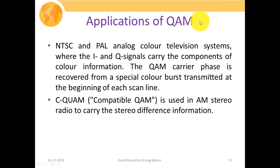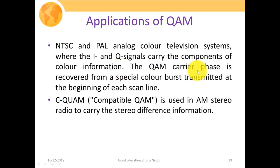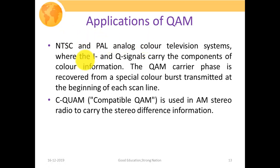The application areas of QAM include NTSC (National Television Standards Committee) and PAL (Phase Altering Line), which are analog color television systems where I and Q signals carry the components of color information. The QAM carrier phase is recovered from a special color burst transmitted at the beginning of each line scan. From these two systems — NTSC and PAL — QAM is used for transmitting color television signals. Compatible QAM (CQAM) is also used in AM stereo radio to carry the stereo difference information.